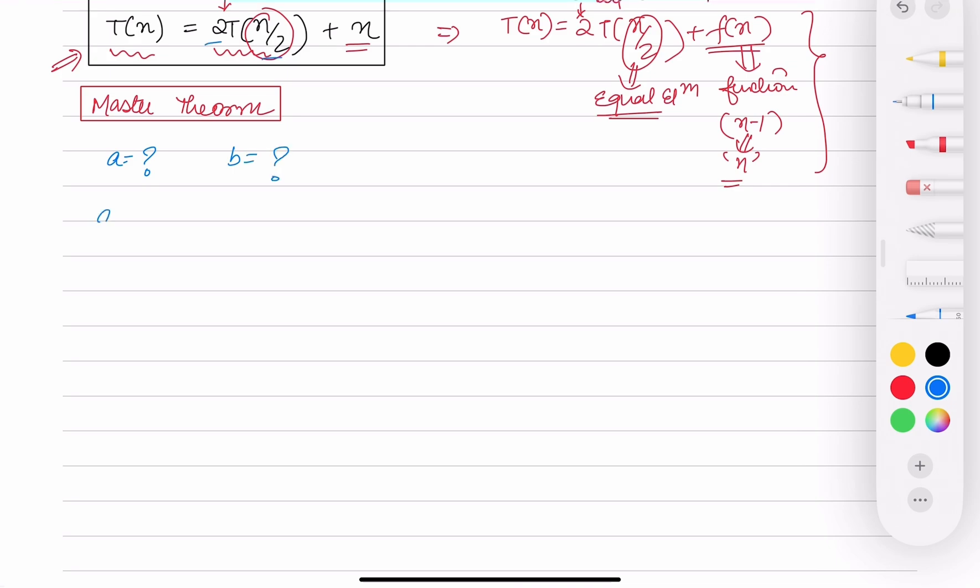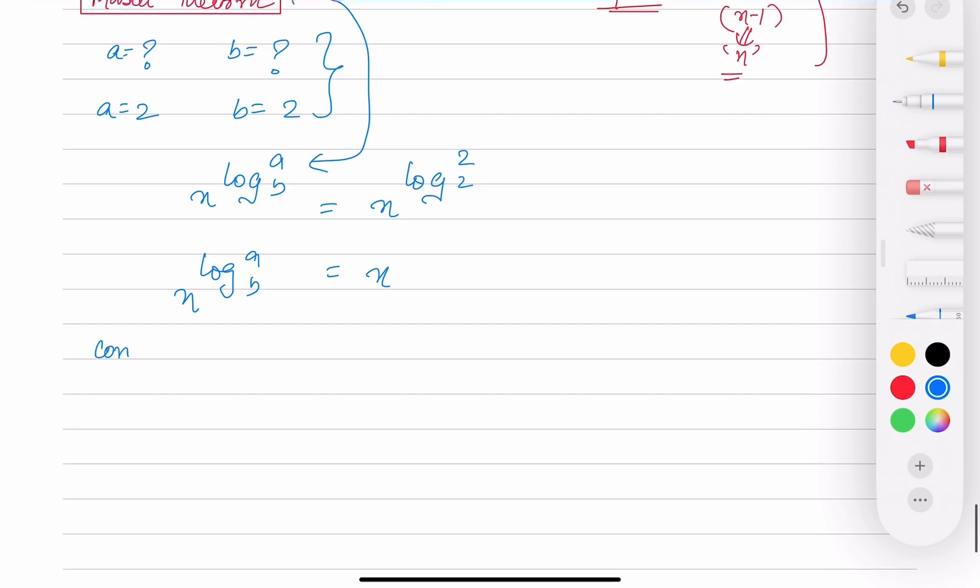What do we get? We need to figure out what is a, what is b. We are given a as 2, b as 2. So if you apply Master Theorem, you will get n^(log_b(a)) equals log_2(2) which is nothing but n.